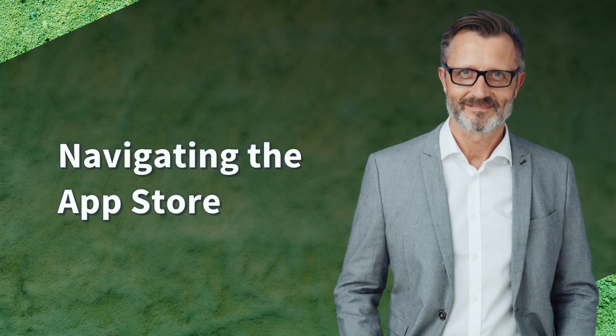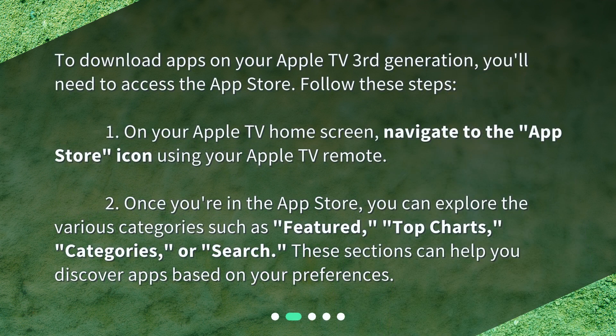Navigating the App Store. To download apps on your Apple TV 3rd Generation, you'll need to access the App Store. On your Apple TV home screen, navigate to the App Store icon using your Apple TV remote. Once you're in the App Store, you can explore the various categories such as Featured, Top Charts, Categories, or Search. These sections can help you discover apps based on your preferences.